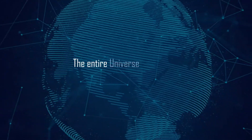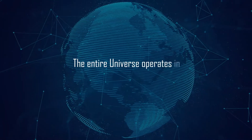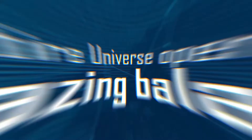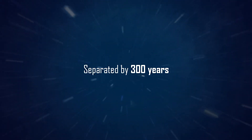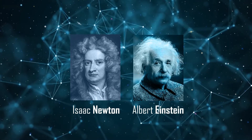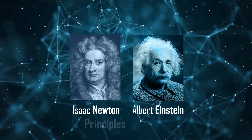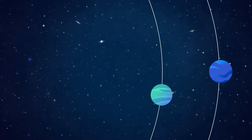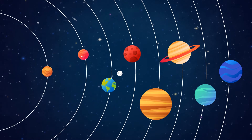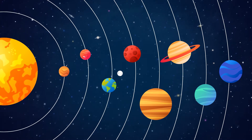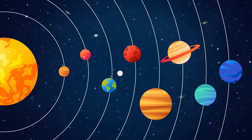The entire universe operates in amazing balance. Separated by 300 years, Sir Isaac Newton and Albert Einstein held in common the principles of gravity. Large objects attract and manage smaller objects as they all move in perfect harmony.